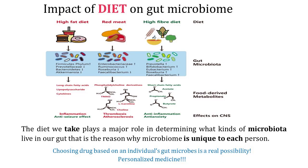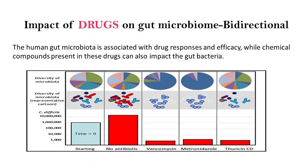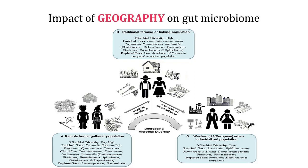Drugs or medicines that we take also influence our gut microbiota, and this is bi-directional. Gut microbiome can be influenced by drugs, and the gut microbiome can also influence an individual's response to drugs by enzymatically transforming the drug structure and altering its efficacy. Thirdly, our gut microbiota diversity is largely dependent on geographical provenance. People living in non-western countries, particularly Africans, have higher gut microbiota diversity than other areas.